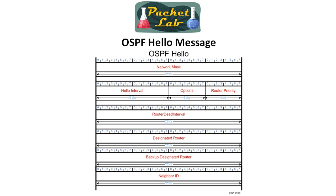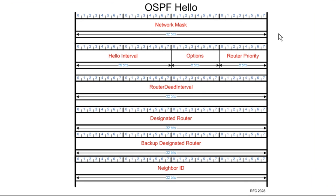Here we see the makeup of the OSPF hello message, and you can see those criteria we were discussing are present in it. We have network mask, hello interval, and router dead interval. Also included are designated router, backup designated router (which depends on OSPF network type), and neighbor ID, which is the router ID of your neighbor. So you can see exactly what is exchanged in the OSPF hello, and these two timers are definitely in there.